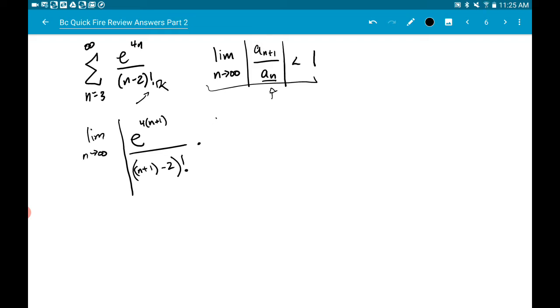And the nth term is just this thing that's represented in the series. And so you have to remember the reciprocal, though. So the n minus two factorial will go on top, and the e to the four n will go on the bottom.